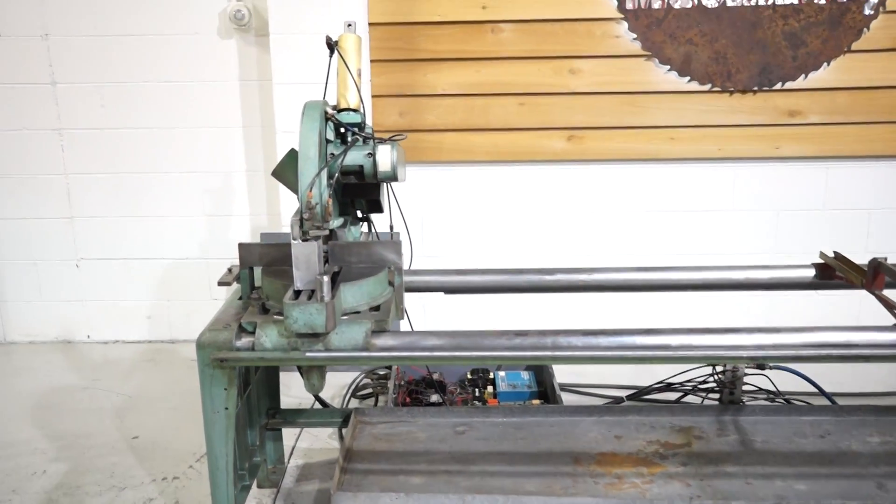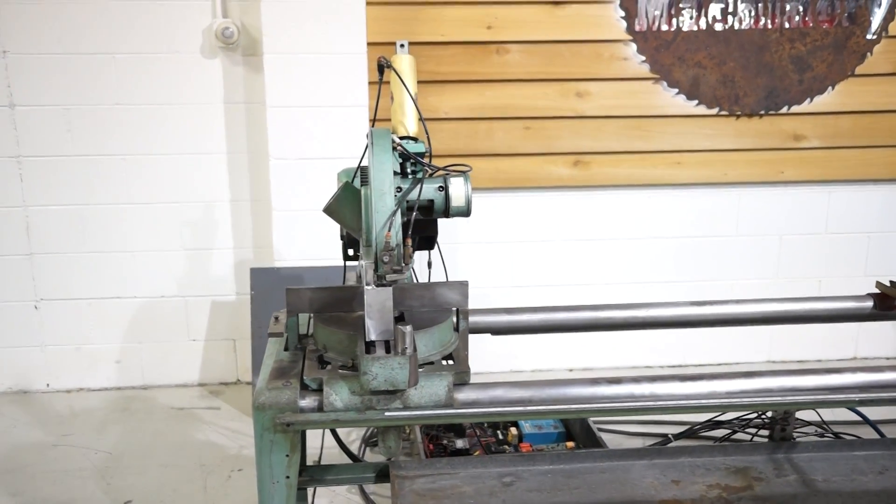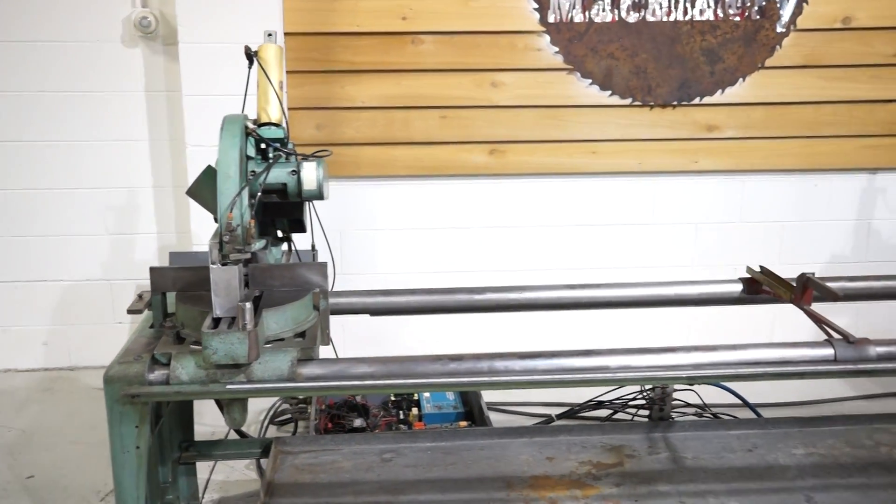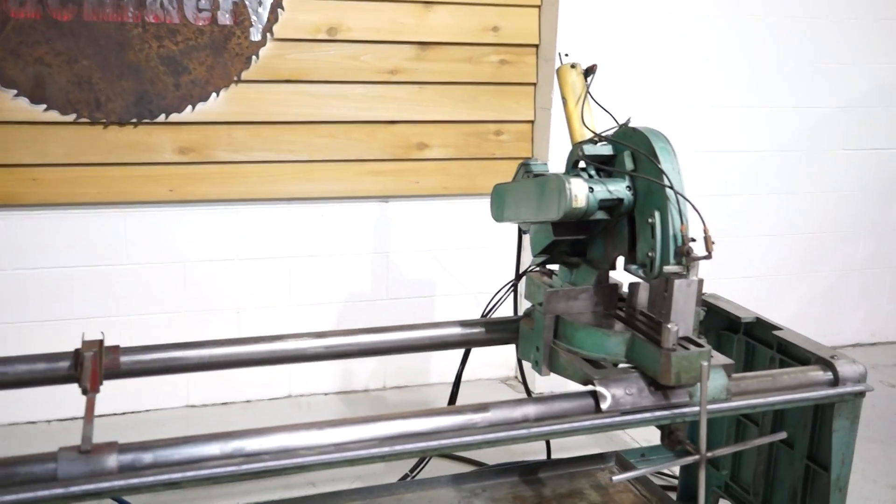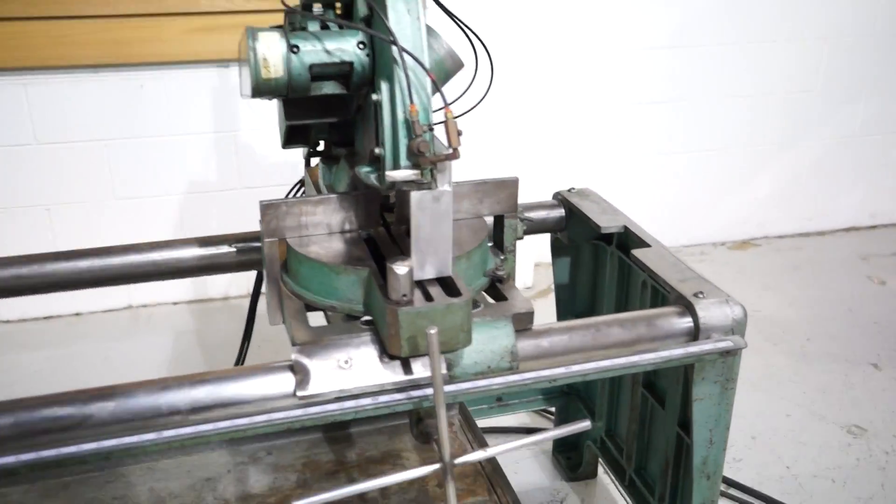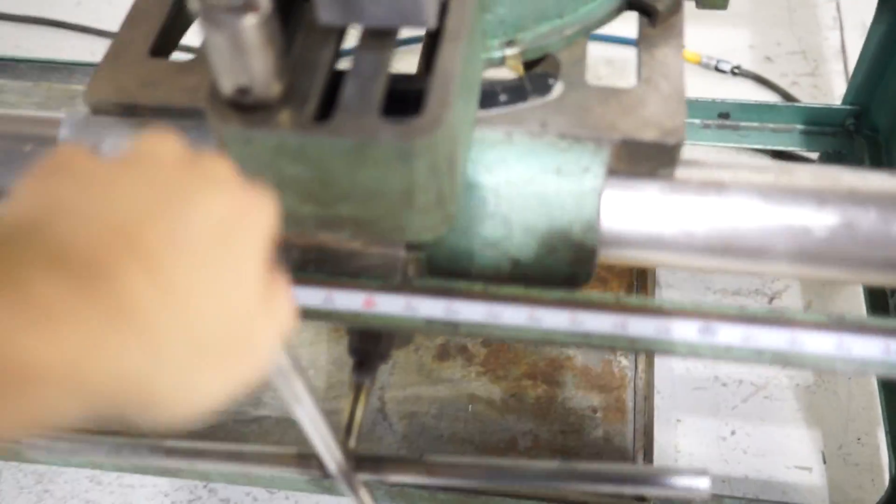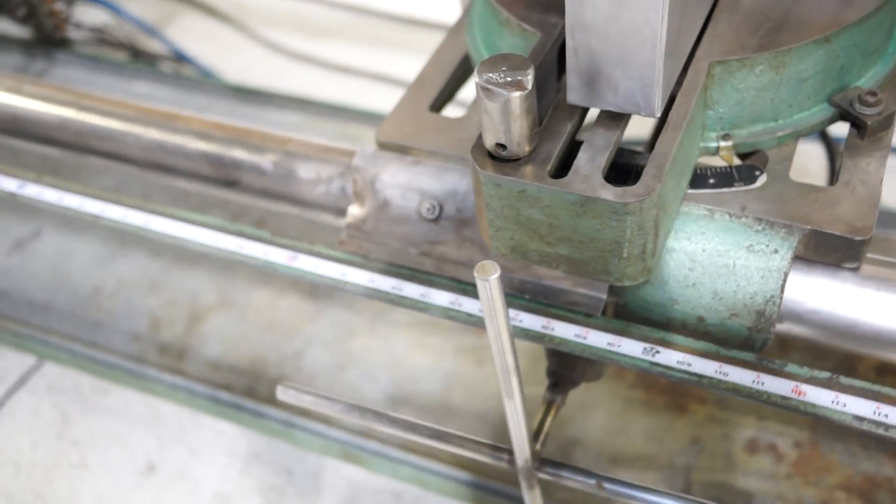The left saw is fixed although it can be repositioned. You index off of it. Your right is the moving saw. You basically just come in here, you've got a hand wheel, and you just rotate it. There's a tooth track underneath it. You just rotate it where you need it to be.